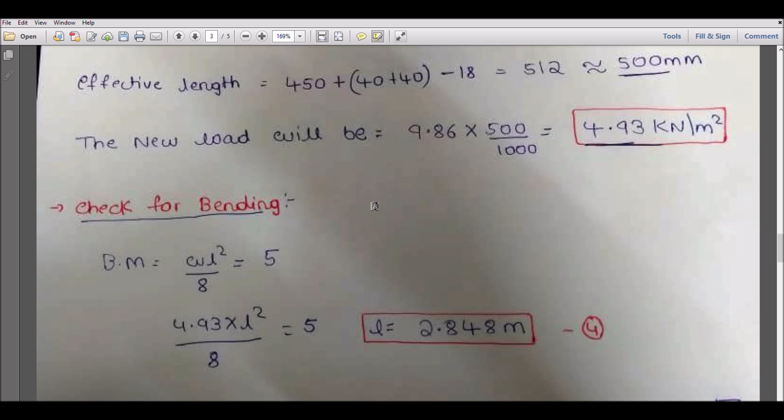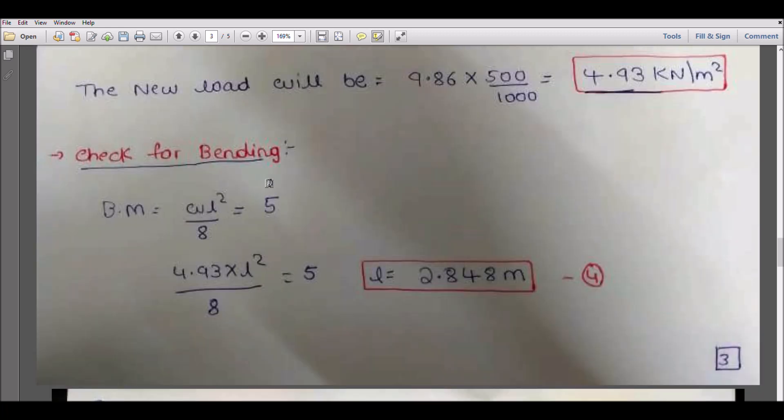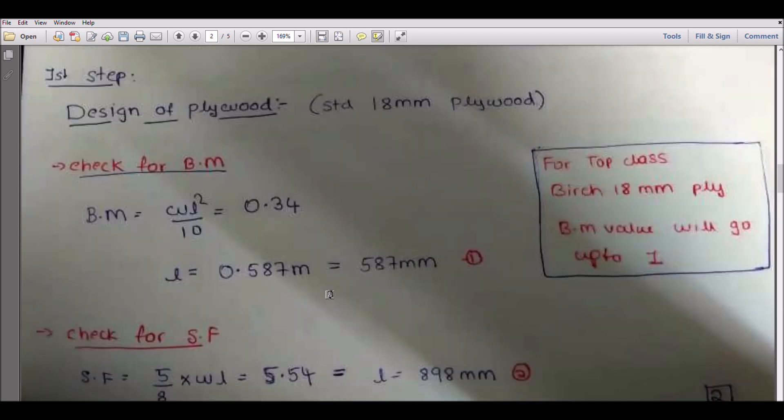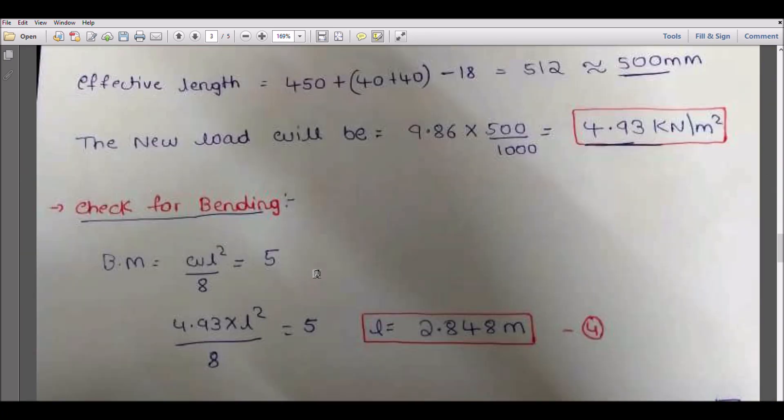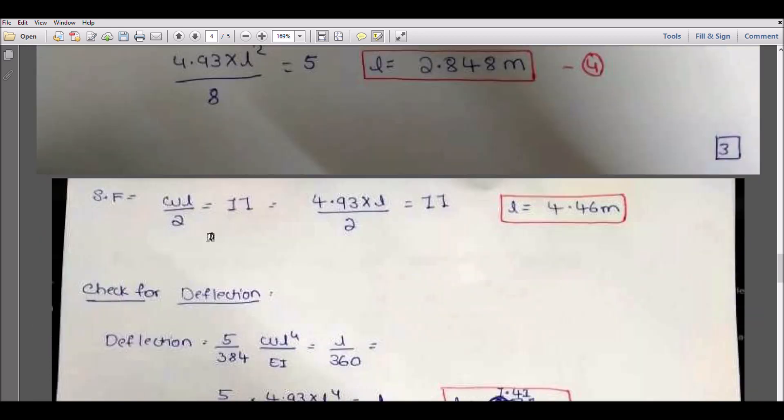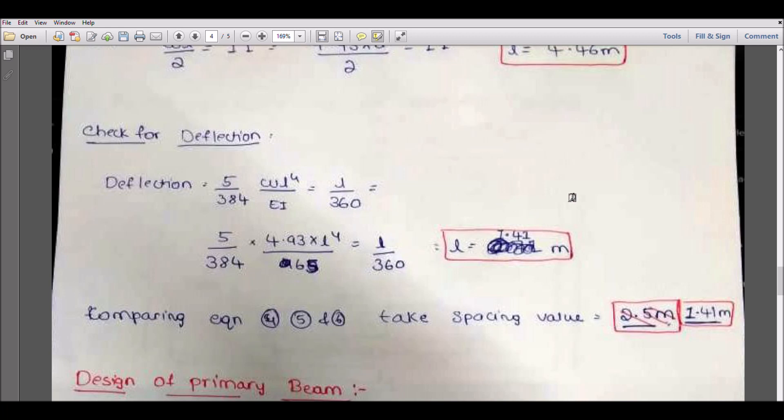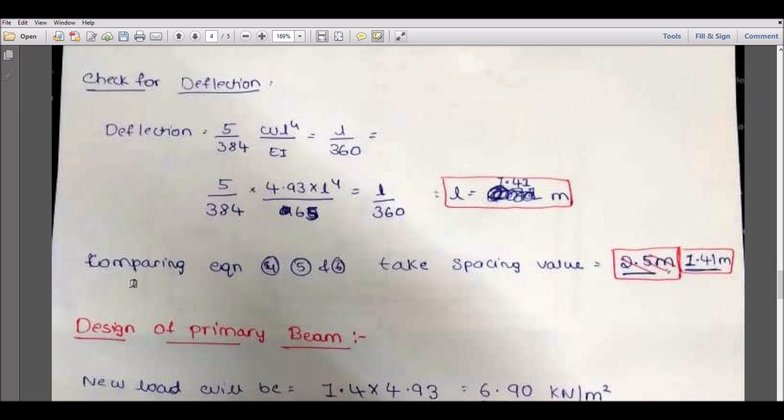Next, same: check for bending, check for shear, then check for deflections. Same formula values, but this value will be differing. Now we are going for the timber beam, so this bending moment value will be 5. If you see in the first, the bending moment value was 0.34 because it's plywood's bending moment. Now we are going for timber's bending moment, so it is 5. Same, you calculate, you will get one length as 2.84. For shear force, this value is 11, then you will get the value as 4.46. For deflection, this value will be 1.44.